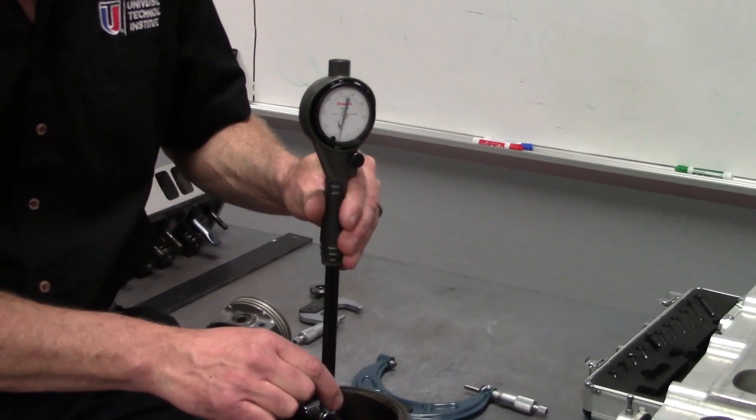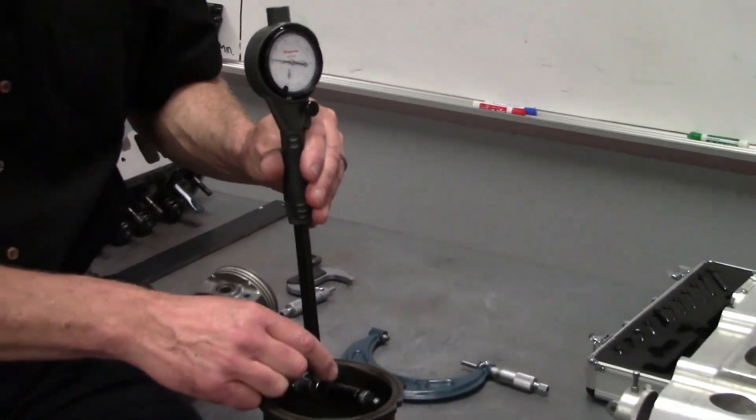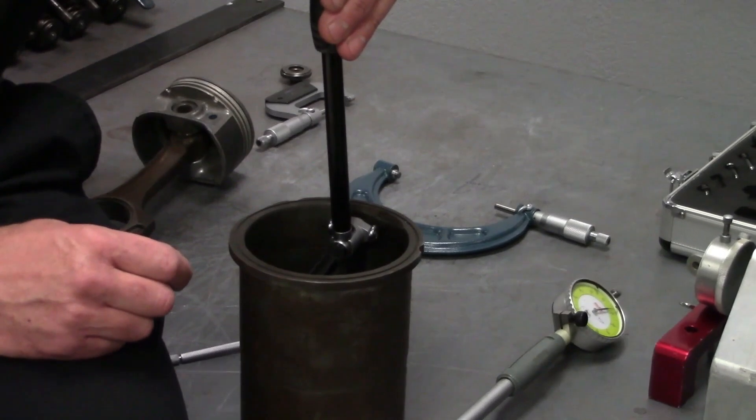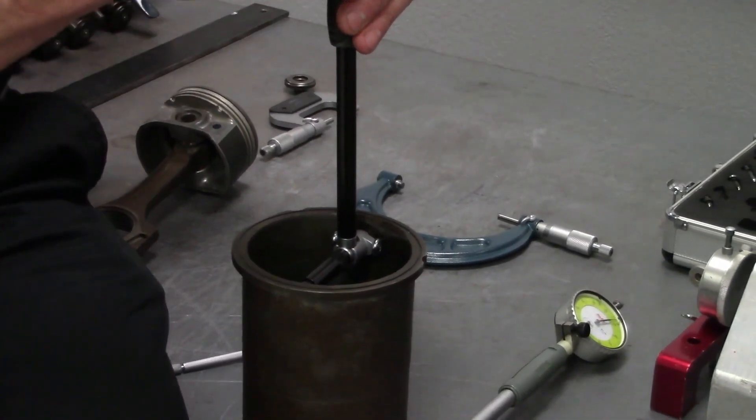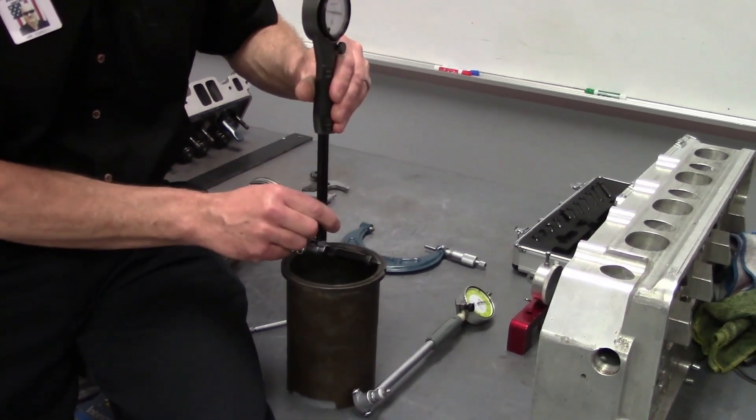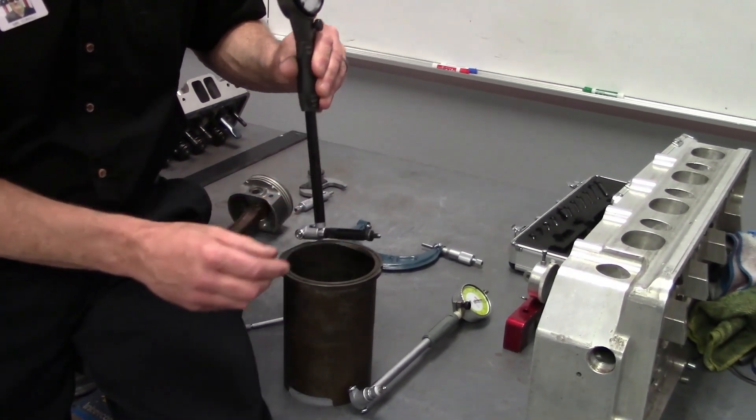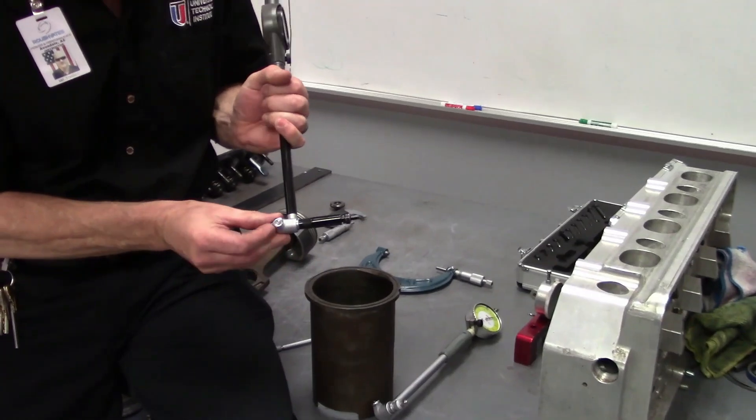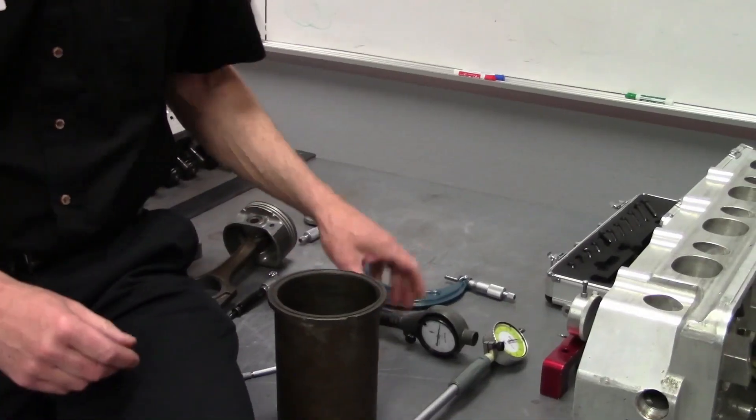We're going to check the bore this way, we'll check it this way, zero it out, and then of course we'll go diagonally this way and check the bore this way. So that's basically taper and out of round.